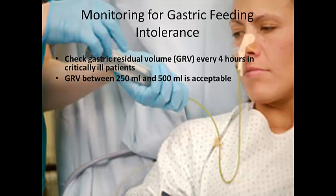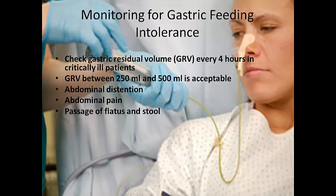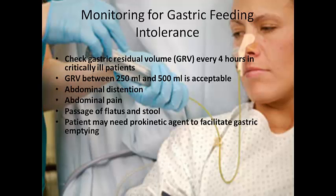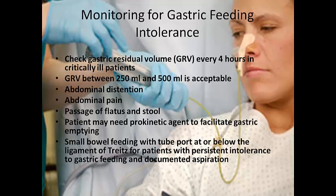GRV needs to be interpreted in the context of clinical evaluation. For example: does the patient's abdomen seem distended? Are they complaining of abdominal pain? Is the patient passing flatus and stool? Even if we have an elevated gastric residual volume and some of these symptoms are present, they may be treated with a prokinetic agent to help the stomach empty. The point is not to rush and hold the patient's feeding just because of an elevated GRV. We can also offer small bowel feeding — placing the tube port below the ligament of Treitz — for patients with persistent intolerance to gastric feeding and documented aspiration.